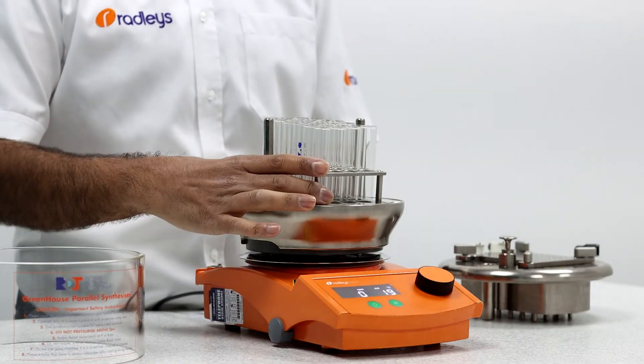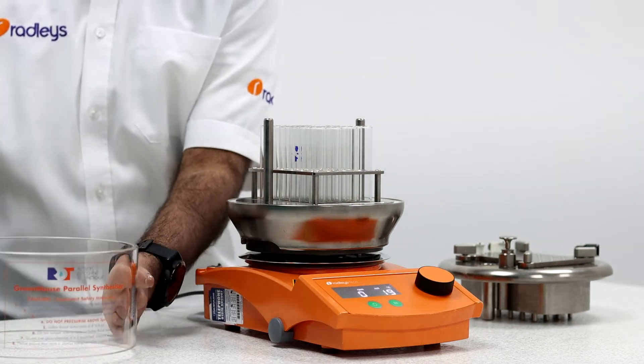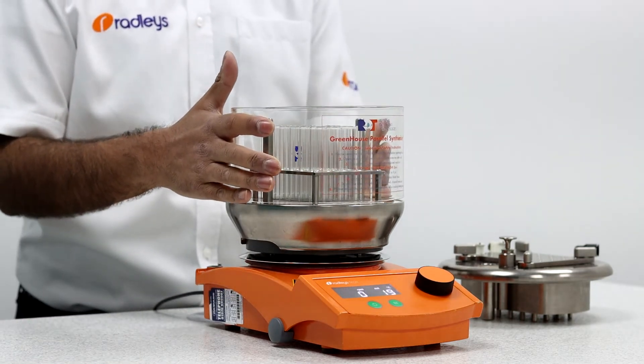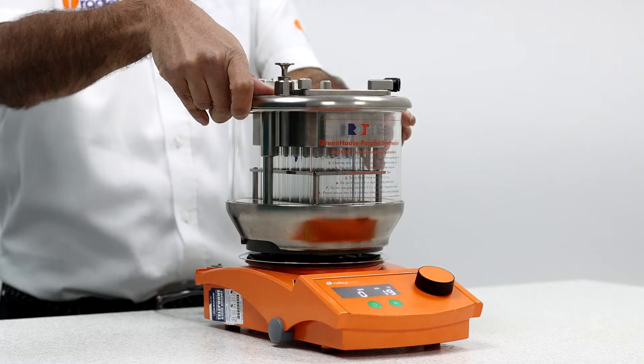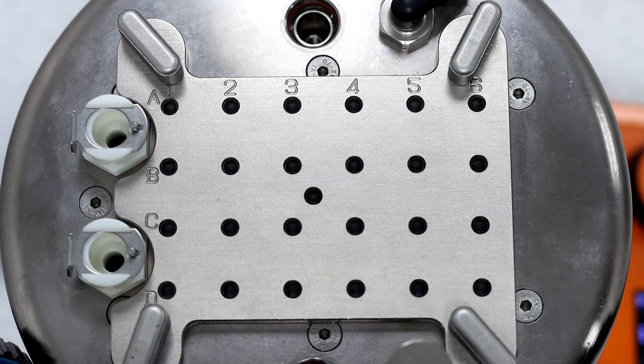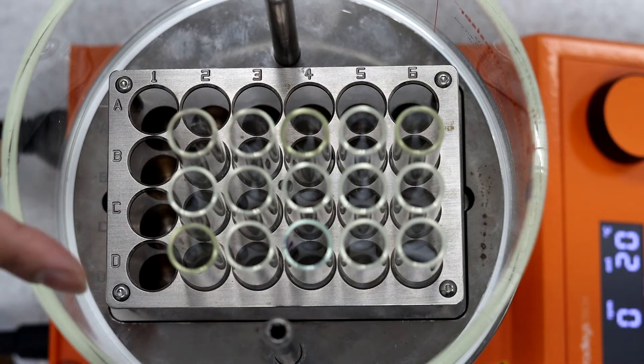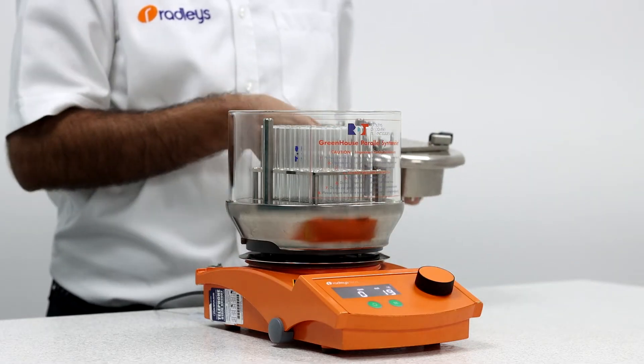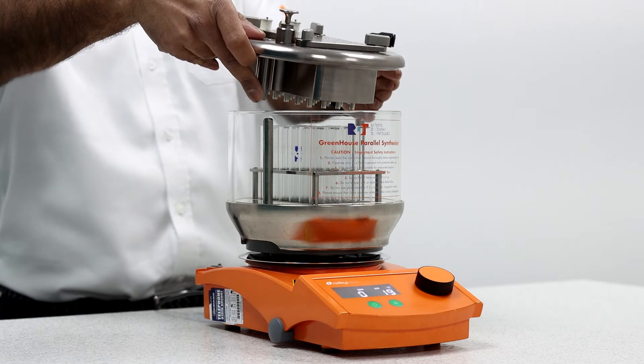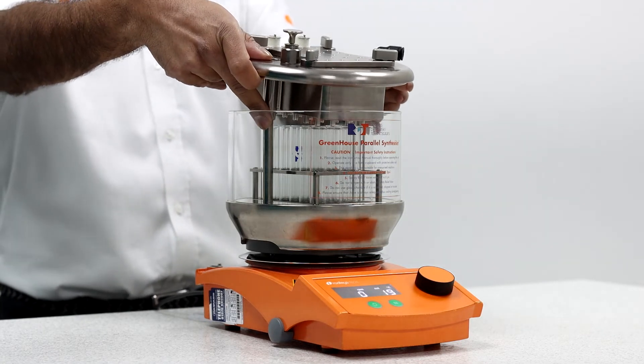Once your reaction tubes are in the base place the glass cylinder onto the base and then place the reflux head into position on top, taking care to align the alphanumeric numbering on the head and the base unit. To make things easier it's best to use the locating pillars when placing the head into position.